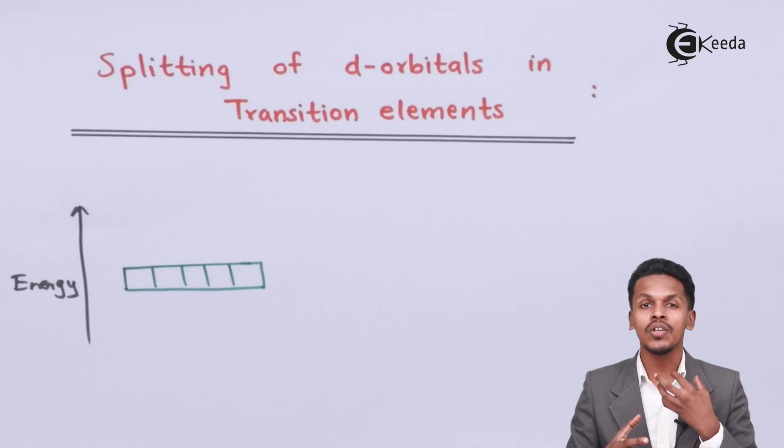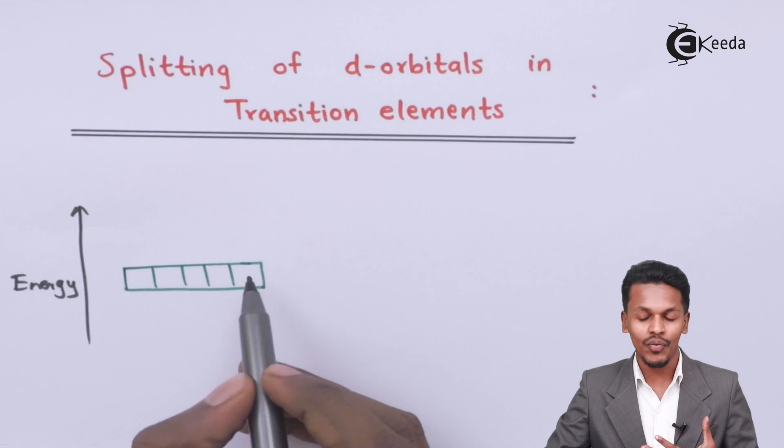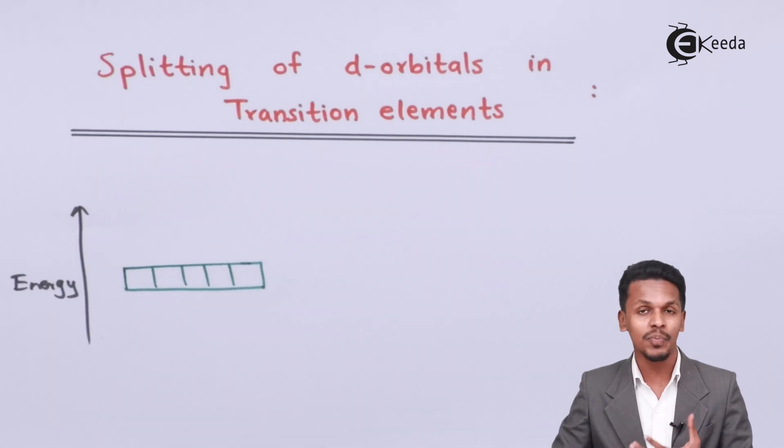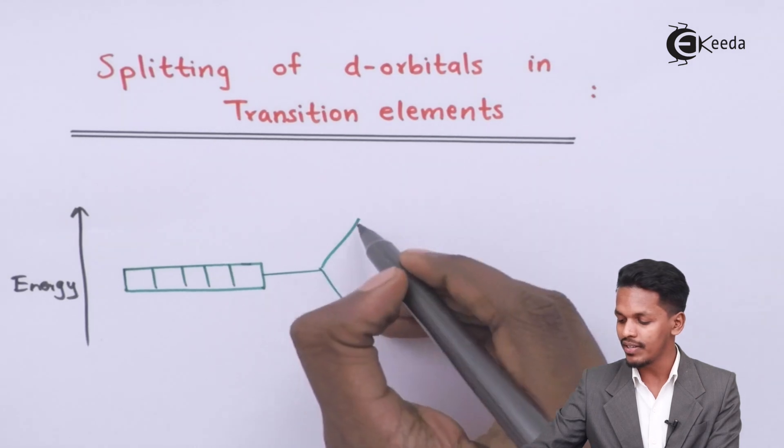So whenever a compound is formed from a d-block element, this degeneracy that we can see here will split into 2 energy levels, and that's the reason I am mentioning this.